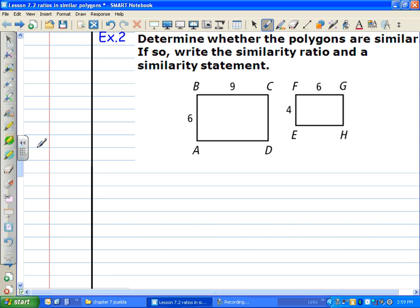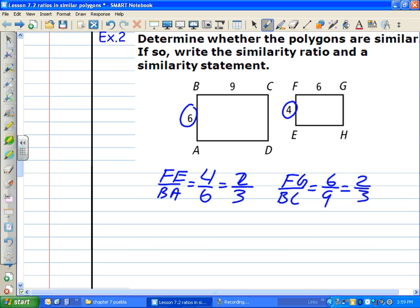Determine whether the polygons are similar. If so, write the similarity ratio and similarity statement. Let's do the ratios. 4 to 6, and that's for FE to BA. Let me write that down—FE to BA, 4 to 6, which is really 2/3. And let's do the other one, FG to BC, and that's going to be 6 to 9, and that's 2/3 also. Because these have the same similarity ratio, these are similar shapes. And that's all you need to know.